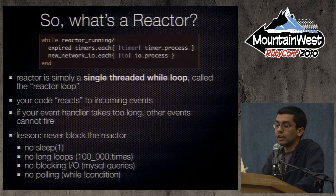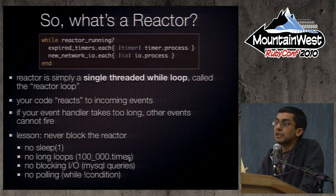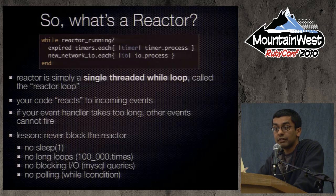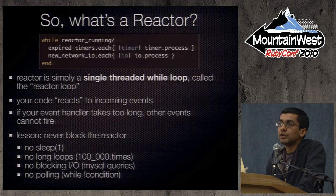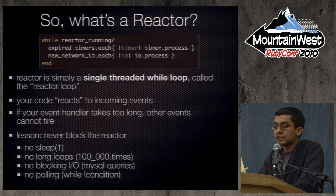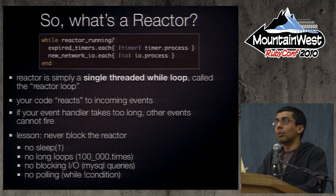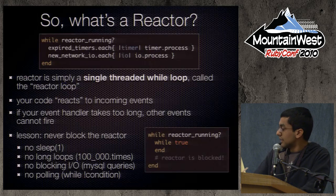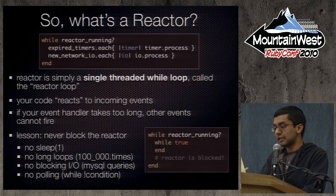The big lesson here — and we'll come back to this over and over again — is that in a reactor-based system, you can never block the reactor. A lot of common APIs you might be used to as a Ruby developer you cannot use. You can't sleep — if you start sleeping inside the while loop, it blocks that loop and nothing else can happen. Similarly, iterating over 100,000 items will block. Blocking I/O, MySQL queries that take a long time — if you're waiting on a five-second query, nobody else can connect for five seconds. If you start your own while loop inside the reactor loop, the outer loop is essentially blocked.